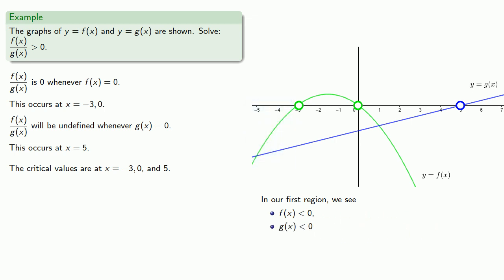So our quotient f of x divided by g of x is a negative number divided by a negative number, which is going to be positive. And so our solution interval should include this first interval from negative infinity up to negative three.